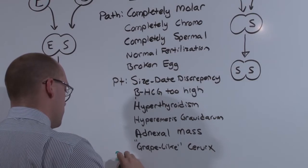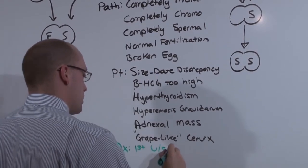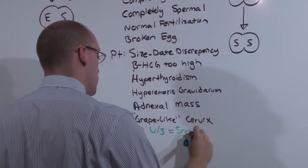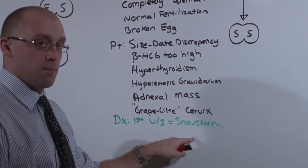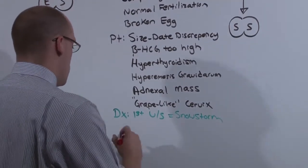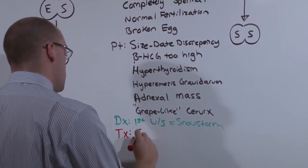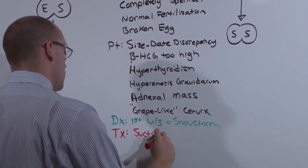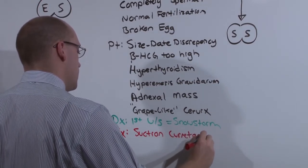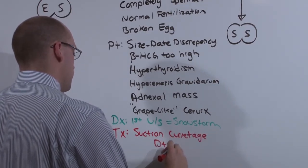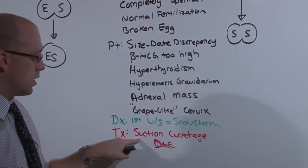To diagnose it, the first test you're going to get is the ultrasound, and the ultrasound shows a snowstorm pattern. You'll probably see a picture of the ultrasound on your test. You can't miss this. The treatment and actual best diagnostic test, this is the quote unquote biopsy, is suction curettage. And notice that suction curettage is not a D&C, and will likely be an answer on your test. Pick suction curettage.